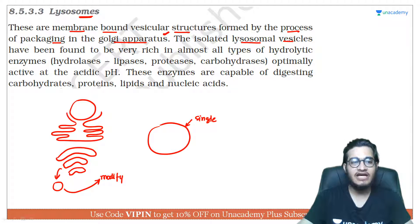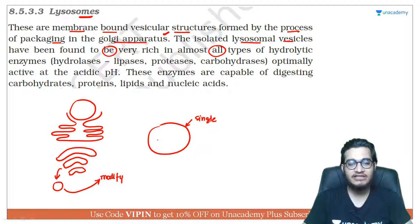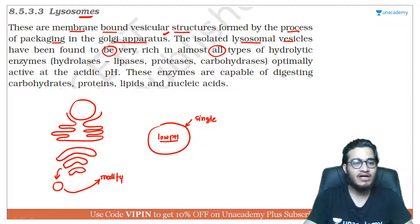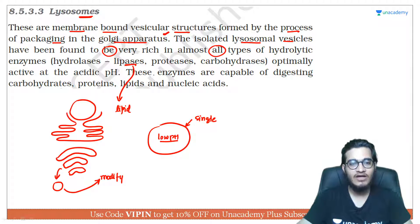Isolated lysosomal vesicles have been found to be very rich in almost all types of hydrolytic enzymes। इसके अंदर काफी सारे enzymes होते हैं जो कि low pH पर activate हो जाते हैं, और ये लगभग हर biomolecule को digest कर सकते हैं। जैसे आपका lipases — lipases आपका lipid पर act करेगा। आपका proteases जो कि protein पर act करेगा और उन्हें constituent amino acids में तोड़ देगा।